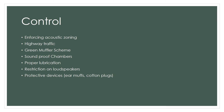The green muffler scheme was implemented where four to five rows of trees or shrubs are grown along roadsides to reduce noise intensity. Soundproof chambers should be introduced, and proper lubrication of equipment should be done so they don't produce loud noises. Restrictions on loudspeakers should be enforced, and lastly, protective devices like earmuffs or cotton plugs should be used, especially for people with higher risk of heart problems. That's all for today's lecture — if you have any doubts, feel free to contact me. Thank you.